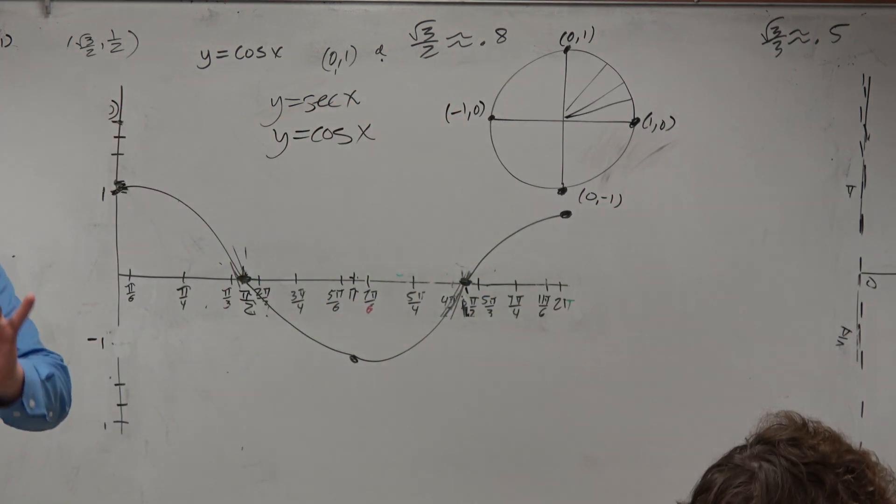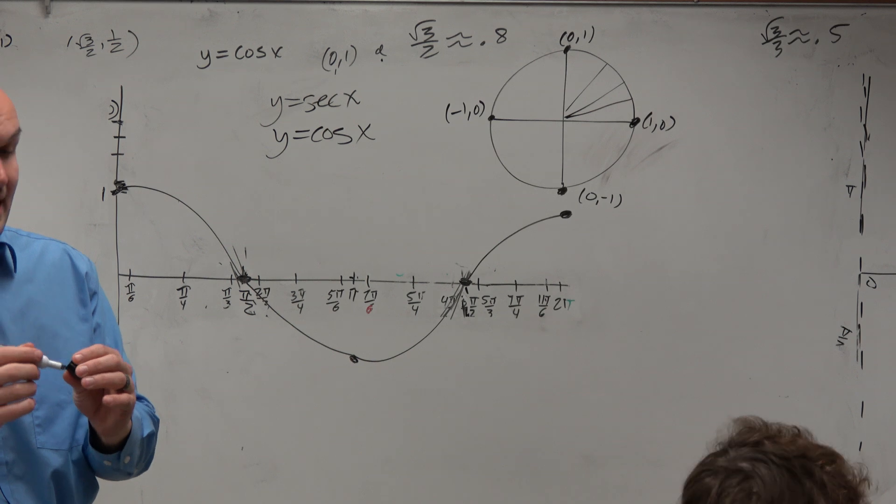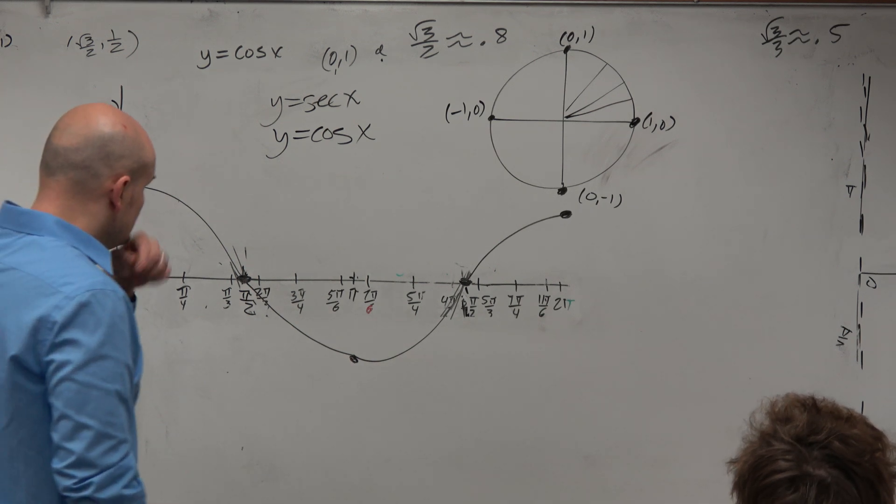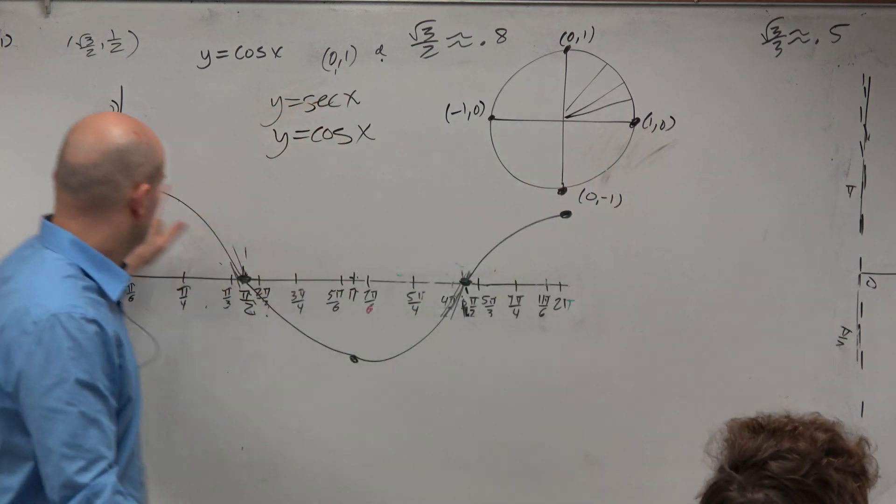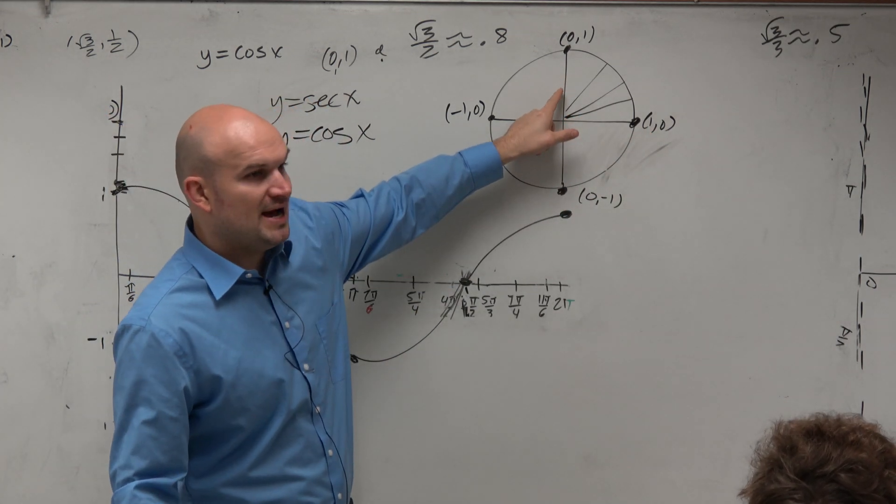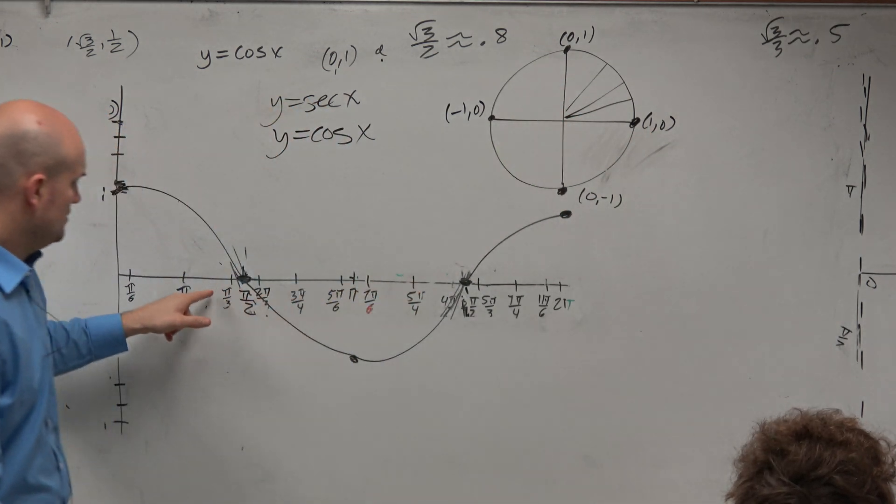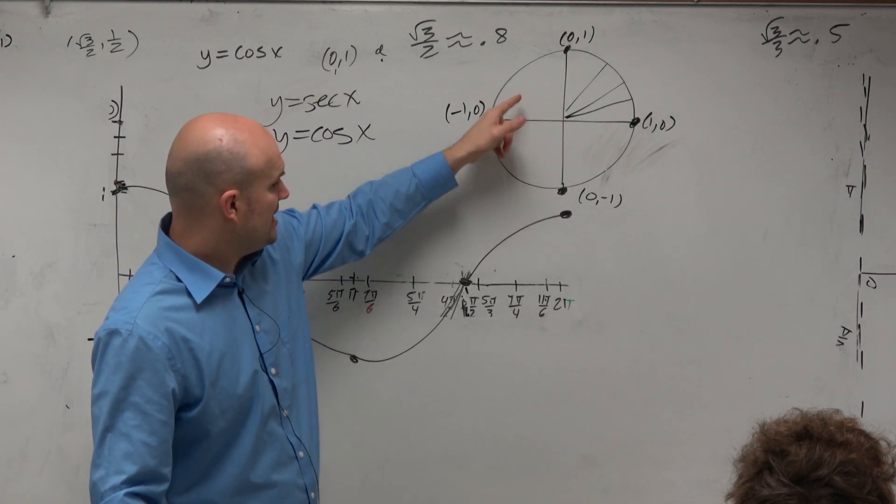So remember, cosine of an angle is the x-coordinate on the unit circle. So the cosine of 0 is 1. The cosine of pi halves is 0. Pi halves, 0. Cosine of pi is negative 1.